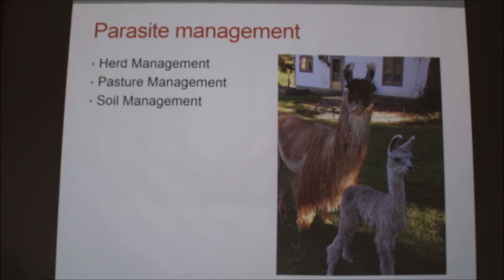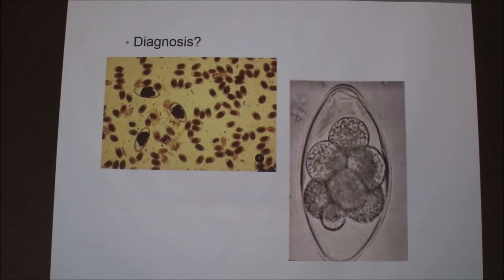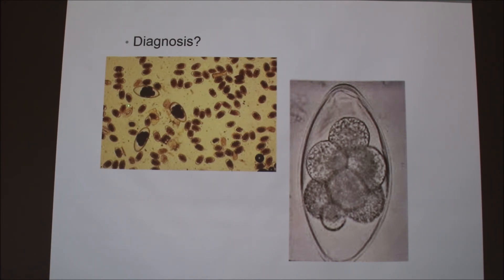When more than one kind of parasite is found — for example, nematodirus cells alongside strongyle cells — they would need to be treated differently, since different dewormers are used for different types of worms.